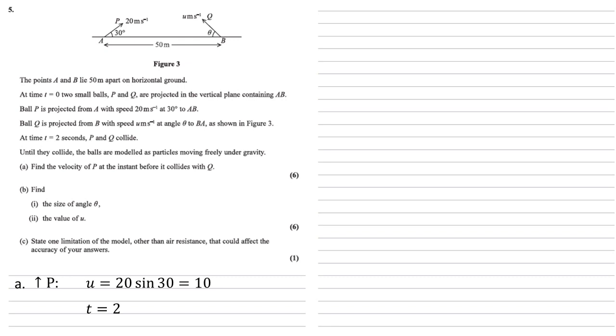We know that it takes two seconds because we're told in the question, and we know that it's going to have an acceleration due to gravity of minus 9.8. This is negative because it's going in the opposite direction. So using the formula V equals U plus AT, we get 10 minus two lots of 9.8, which equals minus 9.6 metres per second.